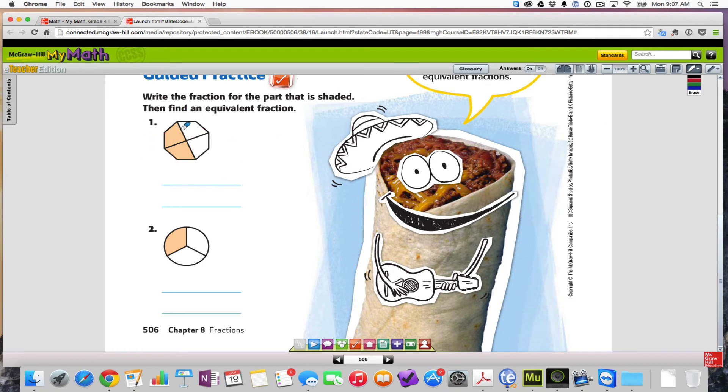It says write the fraction for the part that is shaded, then find an equivalent fraction. So, how many pieces do we have all together? There's four equal pieces. And two of those are shaded. We're using multiplication in this lesson. So, we could times this by, say, two over two. Two times two is four. And two times four is eight. So, four-eighths would be an equivalent fraction.